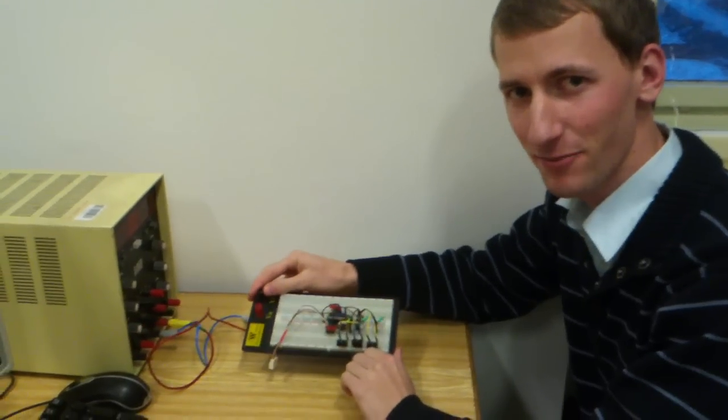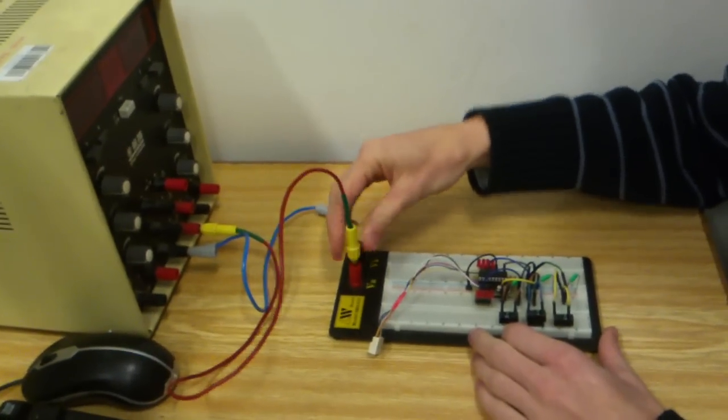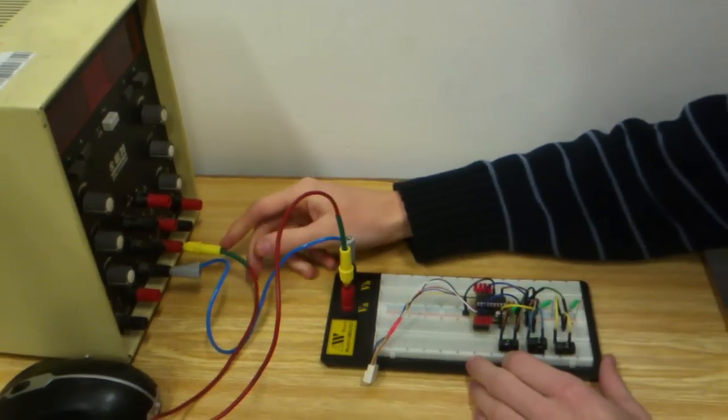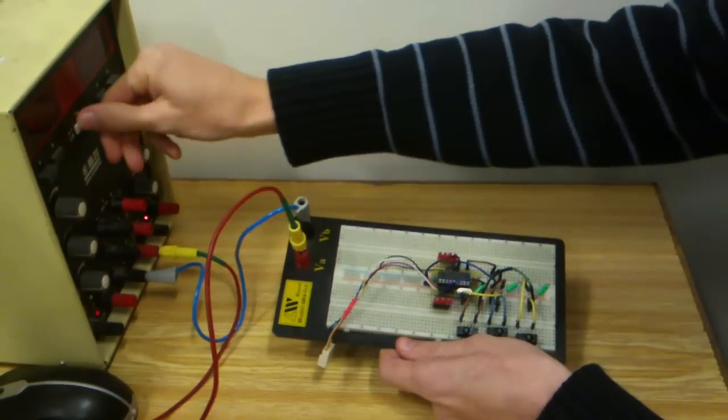And now let's see the functions of this microprocessor and the program. So we have to connect it to the source of energy - it is 5 volts - and turn it on.